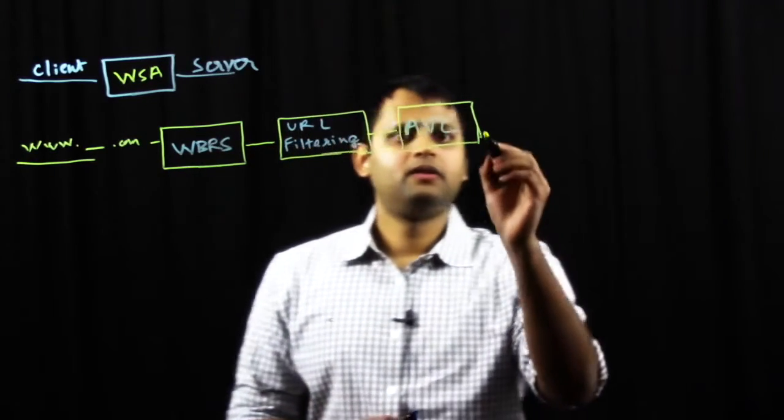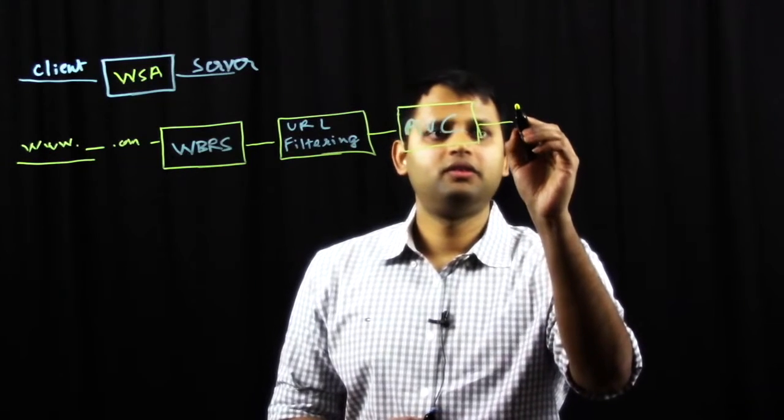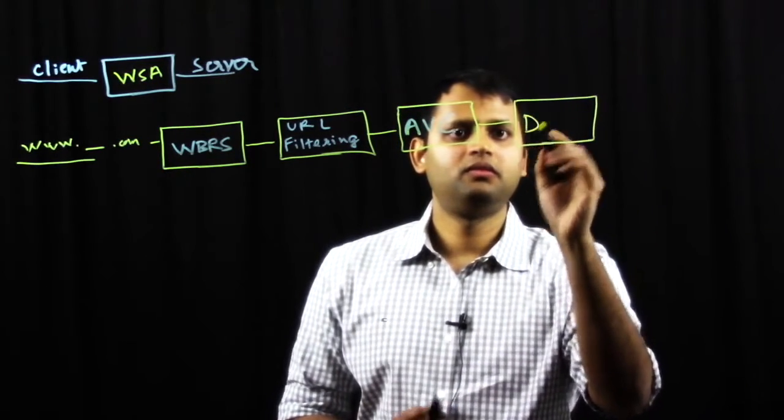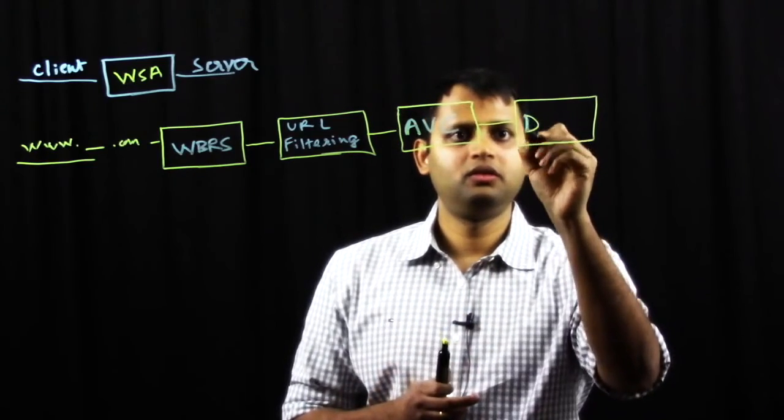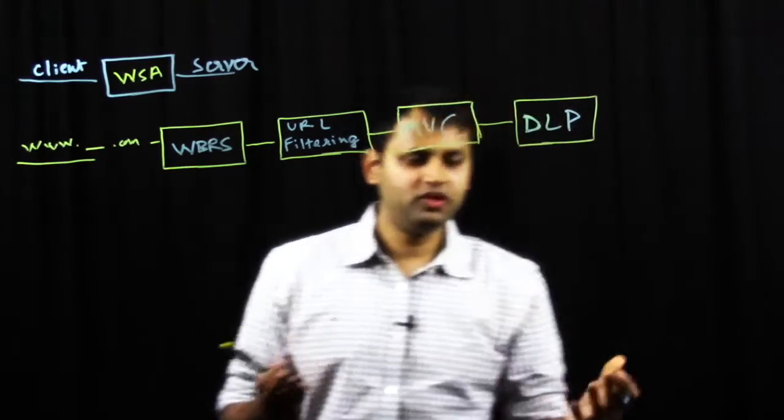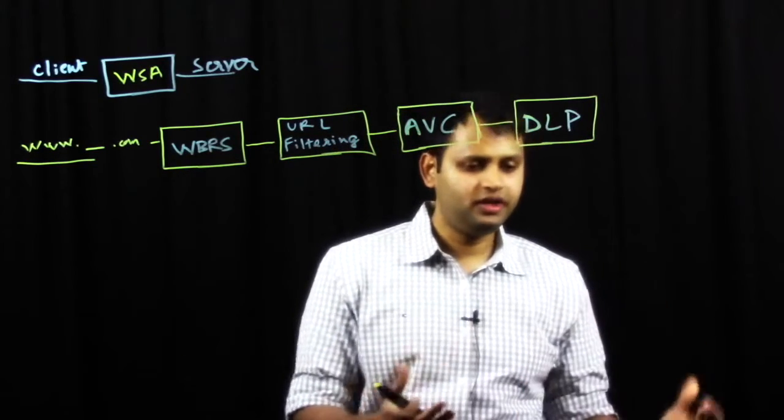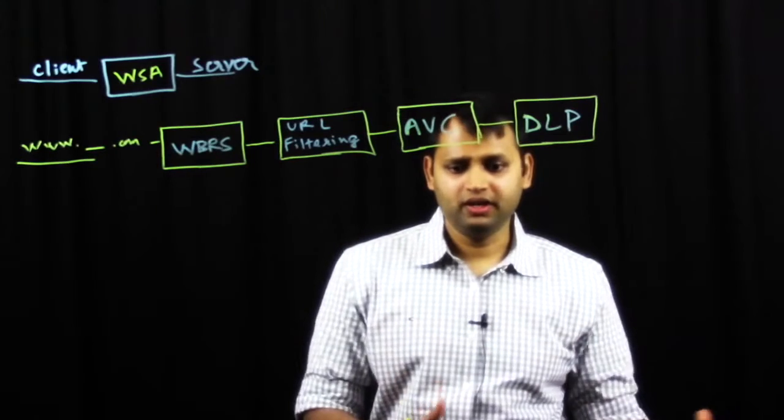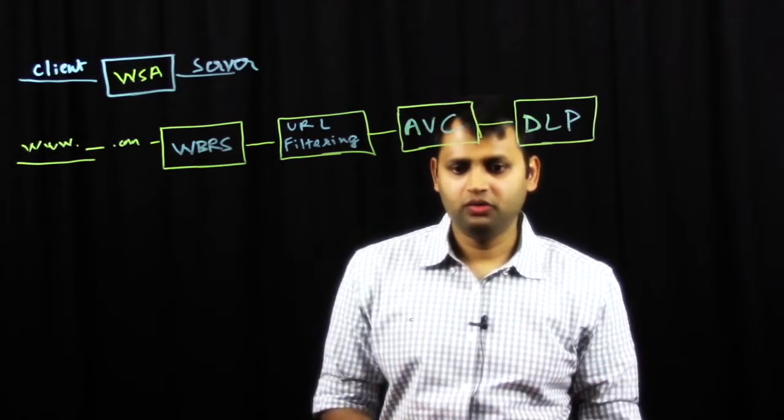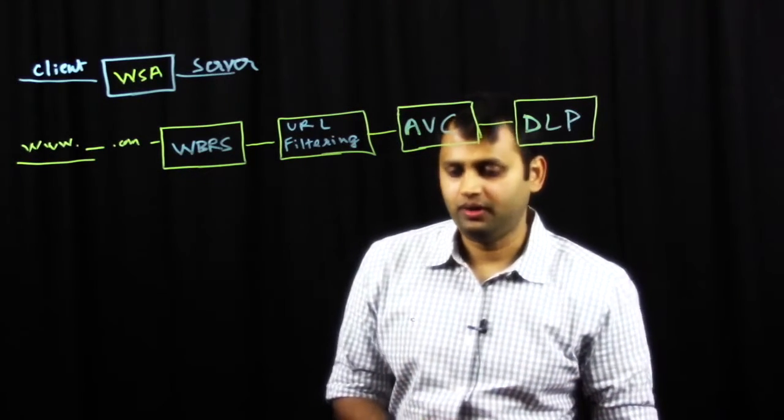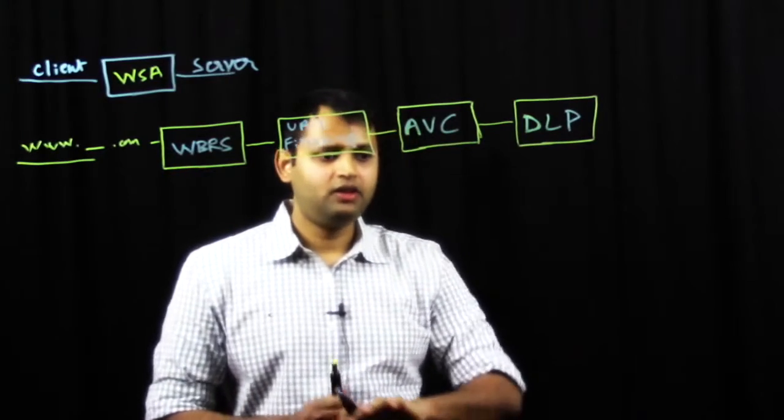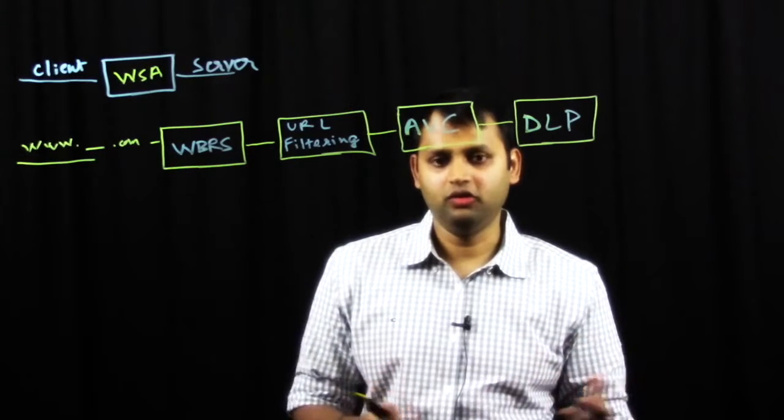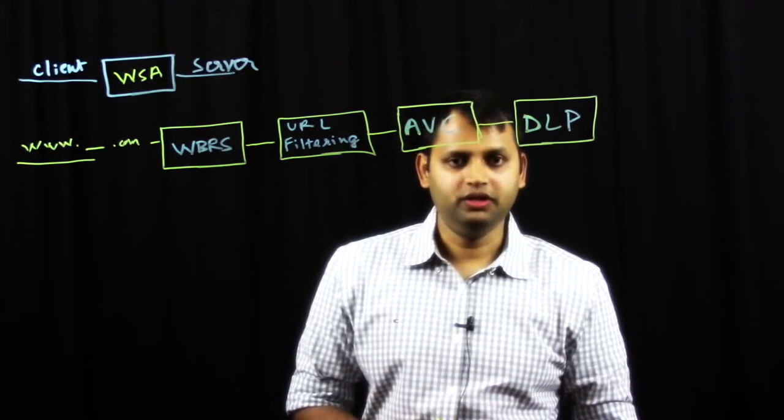Next up, we have DLP, and again, this could be either basic controls on the WSA with DLP, or you could integrate with a third-party DLP application like Semantic 1-2 or Code Green or Digital Guardian, and you can basically block certain files that are being downloaded or uploaded up to the internet.